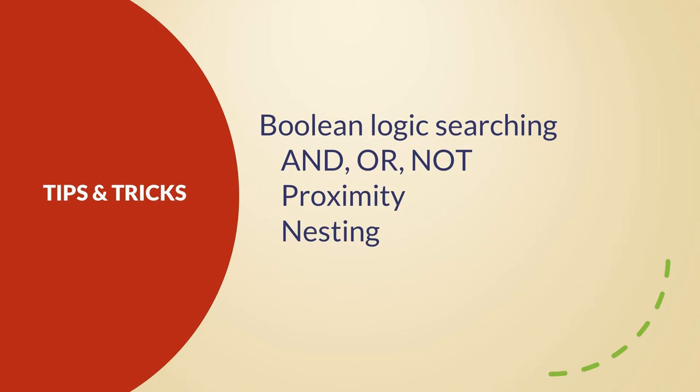Proximity searching allows you to search based on how closely two or more search terms appear in the results. For example, you might specify that second and amendment must be within a few words of each other rather than just anywhere in the article. Not every database supports this in the same way, so check the help documentation if you decide to use it. To retrieve the broadest set of results, you may use the nesting approach, which uses parentheses to keep related concepts together and tells the database to look for those terms first.